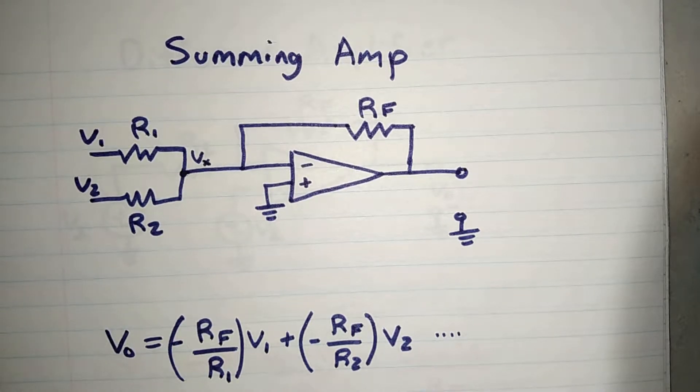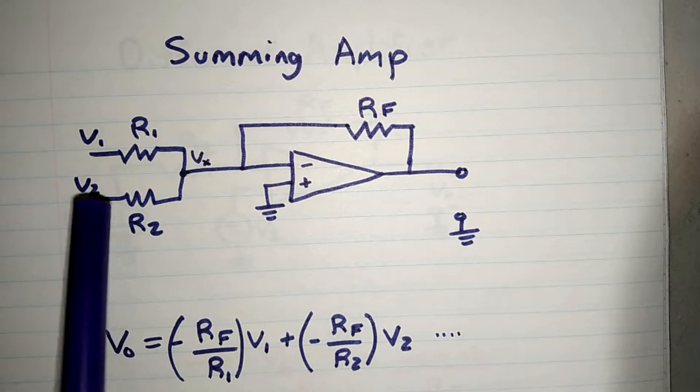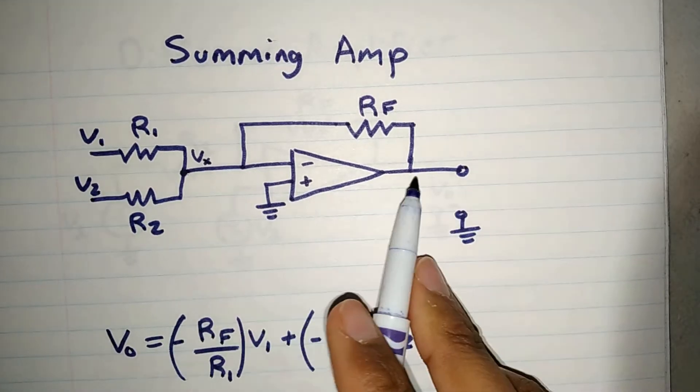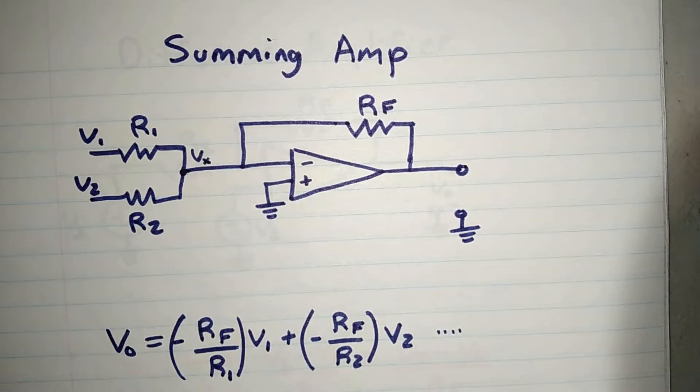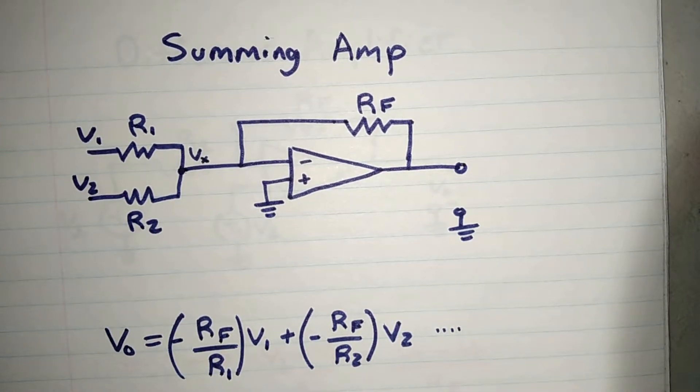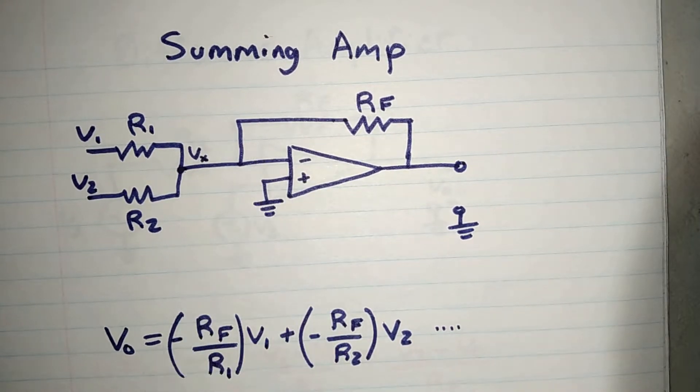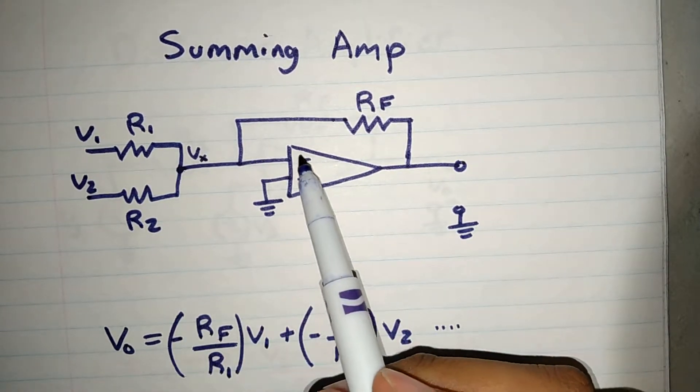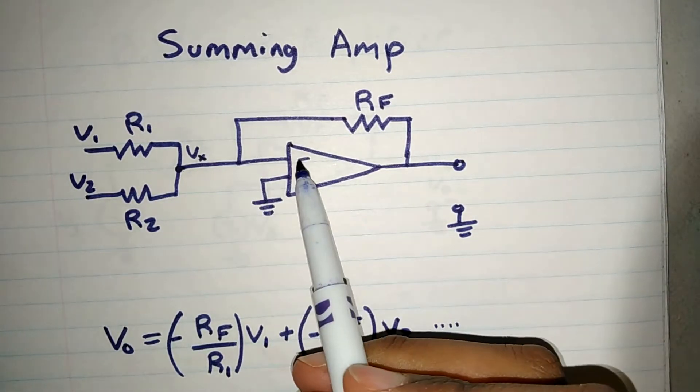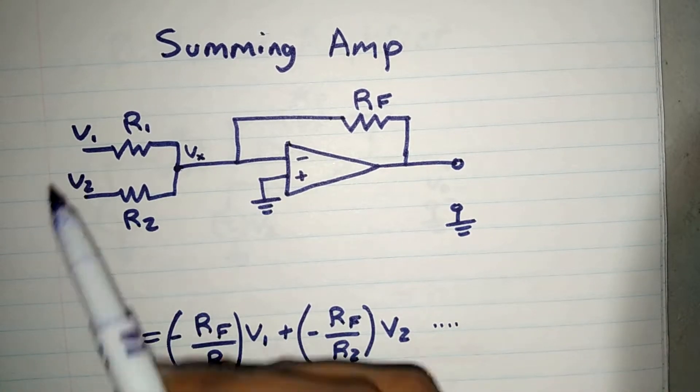So how can we prove that this is a summing amplifier, that it would add up the voltage inputs together to produce an output? This is how you solve it. If you remember in the previous video, we had a negative feedback circuit. And so we connected RF to the negative terminal and the negative terminal would be a voltage source.